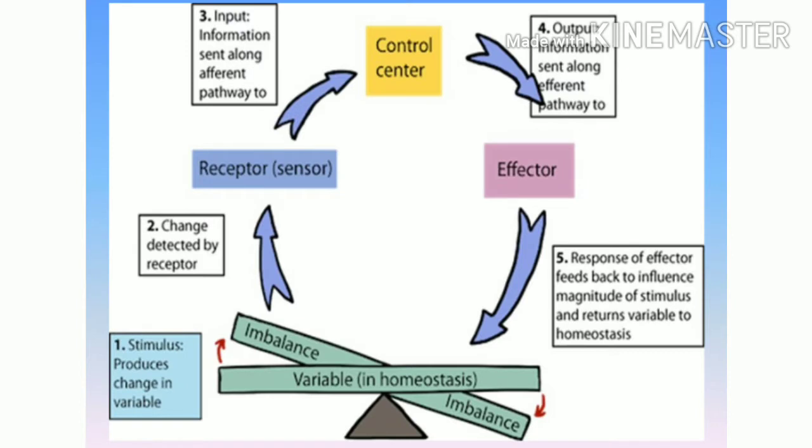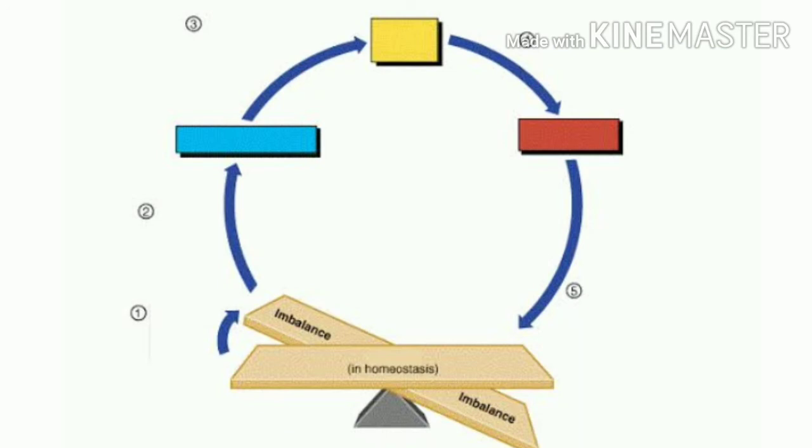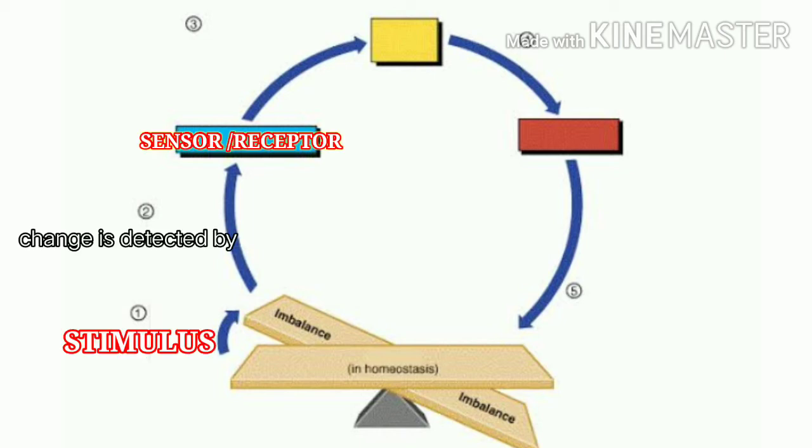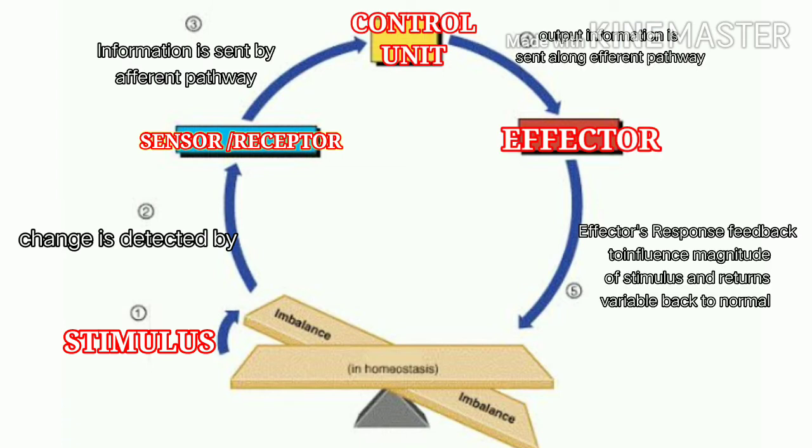So these are the four components of homeostatic mechanism that help us to keep the normal functioning of body and keeping us alive. Can you recall with me? What are the different components in homeostatic mechanism? Yeah, that's right. The first one is stimulus. The second is sensor or receptor. The third is the control unit and fourth are effectors. Great job.